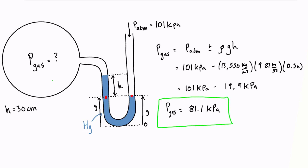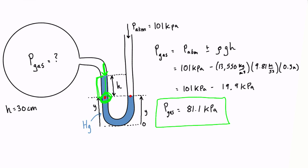So that is our answer. We're assuming the gas has the same pressure everywhere, including right at the surface. At that point, the gas is pressing down with 81.1 kilopascals. As you go further down into the liquid, the weight of the liquid itself increases the pressure. By the time we get down to the lower point, we've increased by 19.9 kilopascals, bringing us back to 101 kilopascals — the pressure at the reference datum level on the open side.